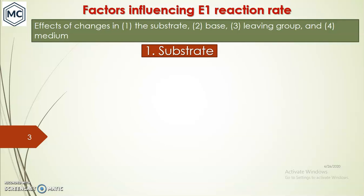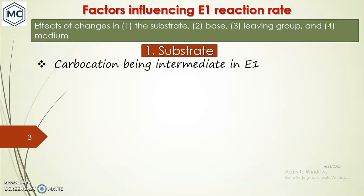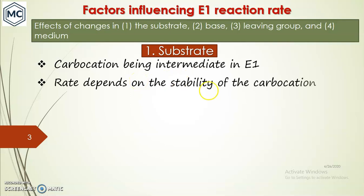In E1 elimination, what are the variables that affect the rate of reaction? First one is substrate, second one is base, third is leaving group, and fourth is medium. These four aspects we already learned in the case of nucleophilic substitution reaction. In E1 elimination, carbocation is the intermediate, and the rate of reaction depends on the stability of the carbocation.